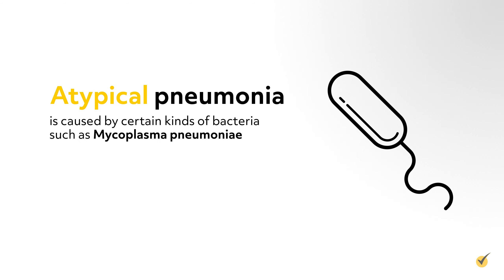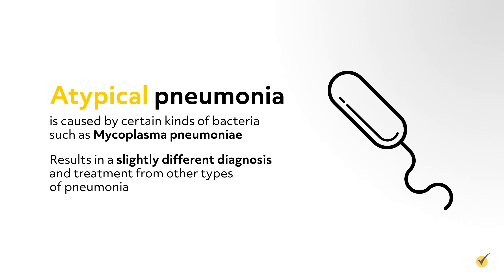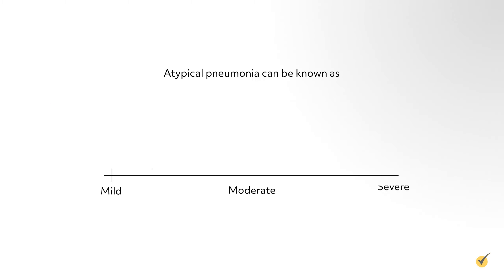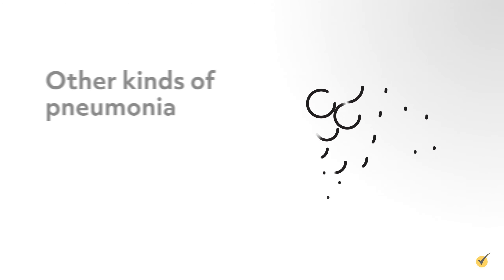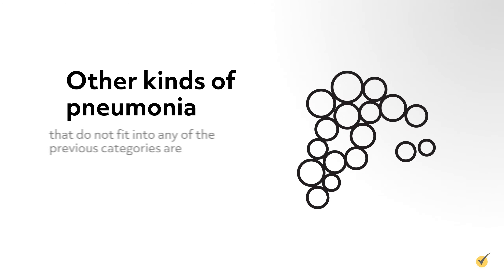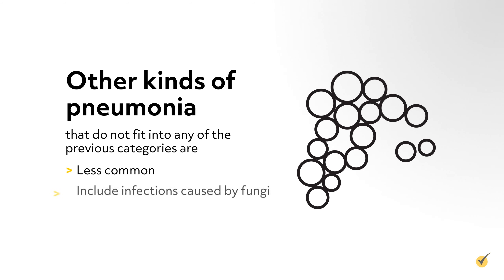Atypical pneumonia is caused by certain kinds of bacteria, such as Mycoplasma pneumoniae, and results in a slightly different diagnosis and treatment from other types of pneumonia. Atypical pneumonia can be known as walking pneumonia when symptoms are less severe. Other less common kinds of pneumonia include infections caused by fungi.